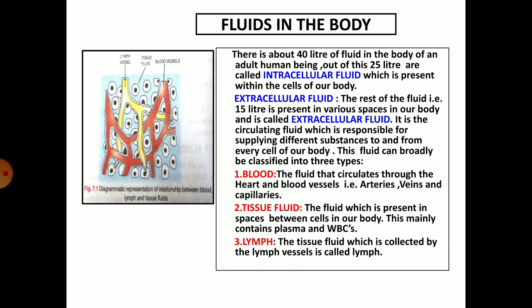There are round about 40 liters of fluid in the body of an adult human being. Out of this, 25 liters are inside the cells of the body — that is, they are the intracellular fluids. The rest of the fluid, round about 15 liters, is present in various spaces in our body and is called the extracellular fluid, meaning it is outside the cell in spaces. This is the circulating fluid responsible for supplying different substances to and from every cell of our body.